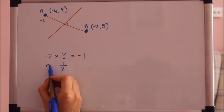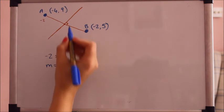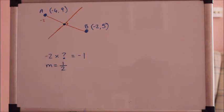So our new gradient is a half. Now we also need a point that it goes through and that point will be the midpoint of AB.